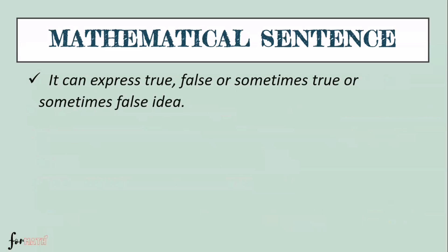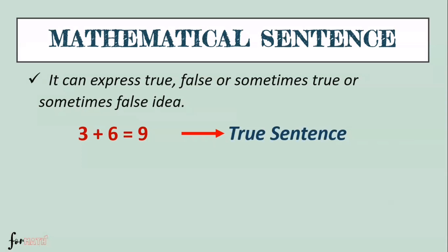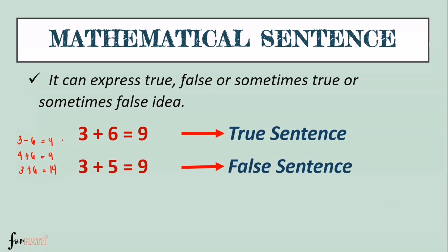A mathematical sentence can express a true, false, or sometimes true/sometimes false idea. For example, '3 + 6 = 9' is a true sentence because three plus six really equals nine. To make it false, we can change the operation: '3 − 6 = 9' is false. Or change a number: '4 + 6 = 9' is false. Or change the result: '3 + 6 = 14' is false. So '3 + 5 = 9' is also a false sentence.